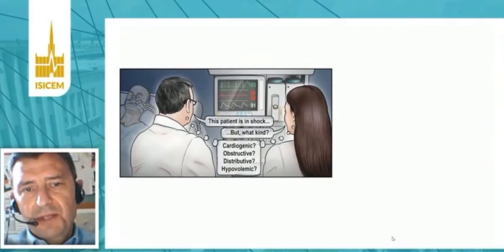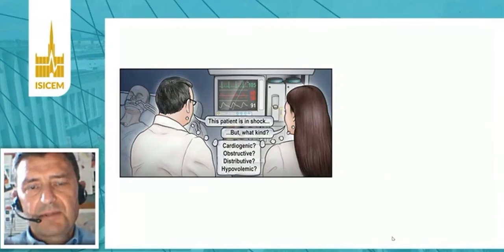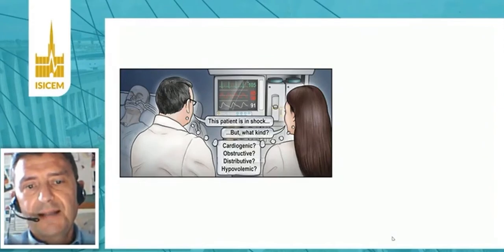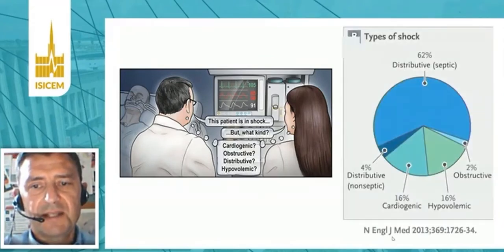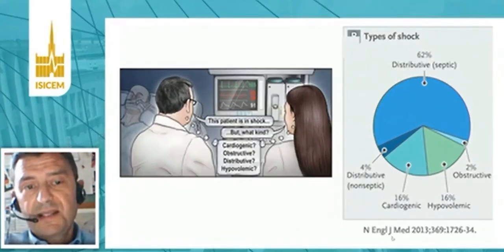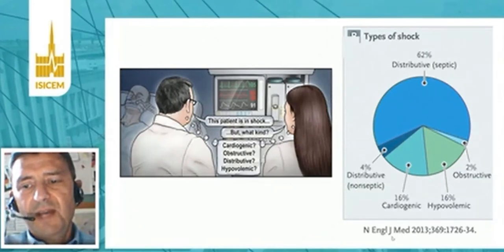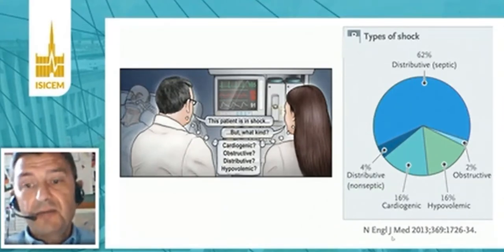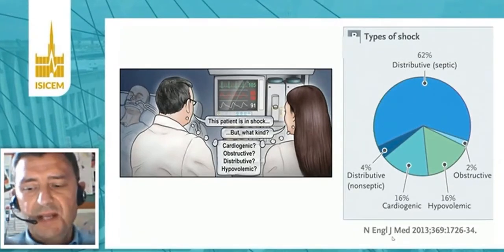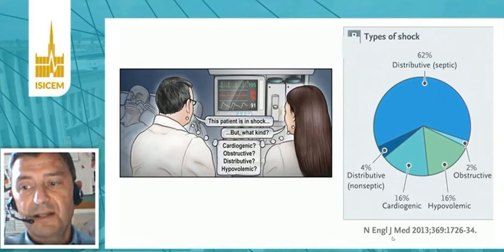We know from clinical experience that we have different types of shock, and it is not always easy to understand what type of shock our patient is experiencing. Around 60% of shock states are distributive septic shock, around 16% each are hypovolemic and cardiogenic shock, 4% are non-septic distributive shock, and 2% show an obstructive shock.